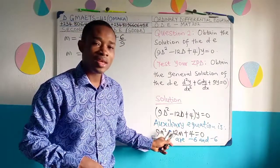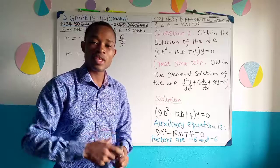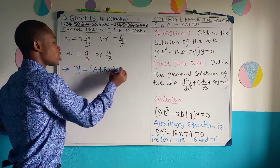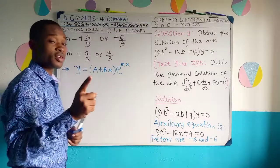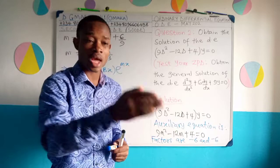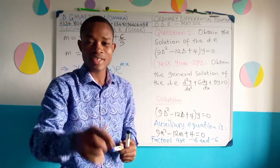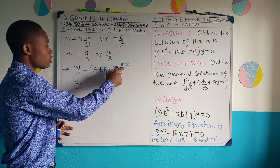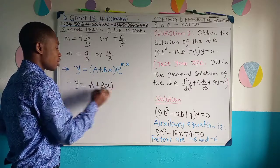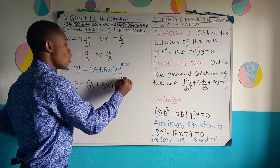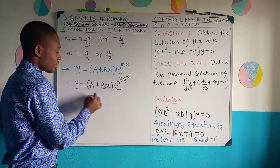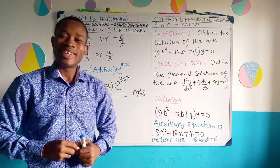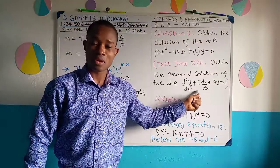We were able to factorize this auxiliary equation, and the roots are equal. Therefore the complementary function is y = (A + Bx)e^(mx). When roots are real and equal — m1 = m2 — this is the solution form to use. Substituting our root m = 2/3, we get y = (A + Bx)e^(2x/3). This is the solution to the homogeneous second-order ODE. Use this principle to obtain the general solution of the assigned practice problem.